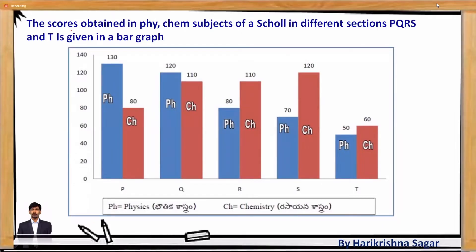Let's apply step one — reading the label or title. The graph shows scores obtained in physics and chemistry subjects in a school for different sections: P, Q, R, S, and T. This understanding is enough to know what the graph is about.